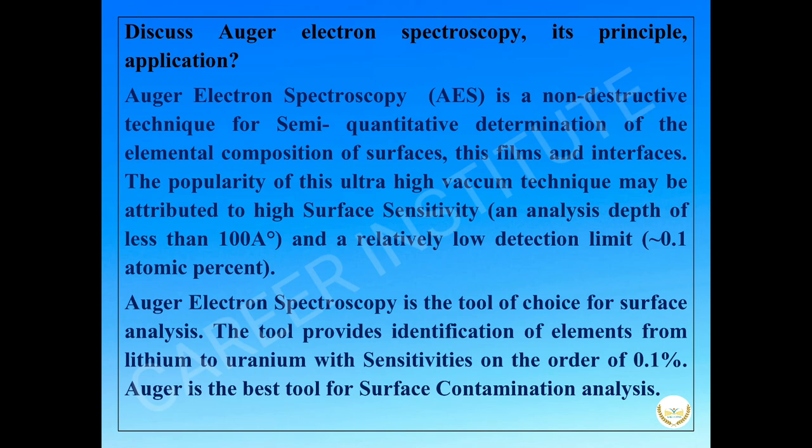Auger electron spectroscopy is a non-destructive technique for semi-quantitative determination of the elemental composition of surfaces, thin films, and interfaces. The popularity of this ultra-high vacuum technique may be attributed to high surface sensitivity with an analysis depth less than 100 angstroms and a relatively low detection limit of approximately 0.1 atomic percent.